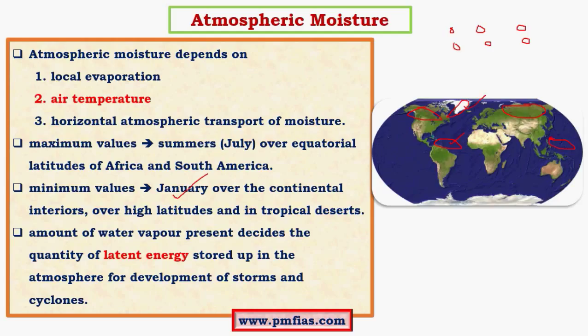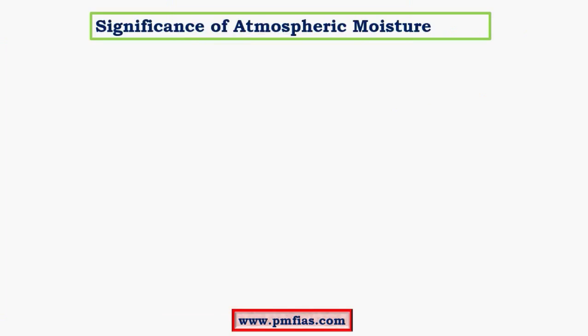In the Sahara Desert, there are no significant water bodies and hence evaporation is very low, making humidity very low there. Atmospheric moisture plays a very important role in driving storms and cyclones, which we will see in detail in future videos.